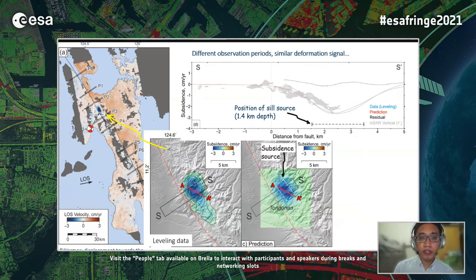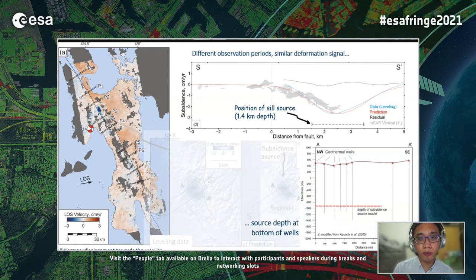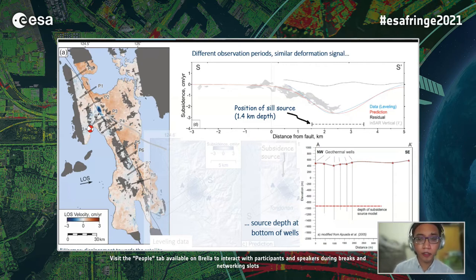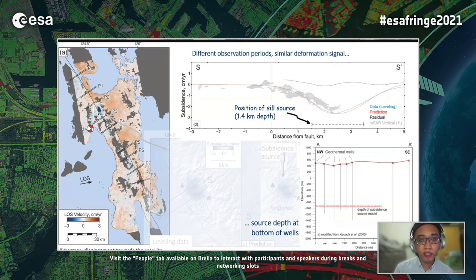We find that the sill source model is at the bottom of the geothermal wells, and we think this suggests that the model may be capturing the depth of the compacting source from fluid extraction. For these reasons, the subsidence source is useful for doing a joint inversion for fault slip and subsidence.